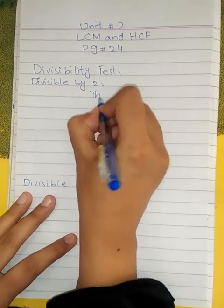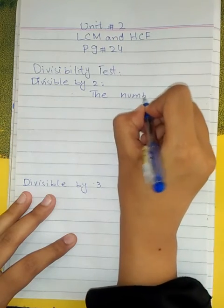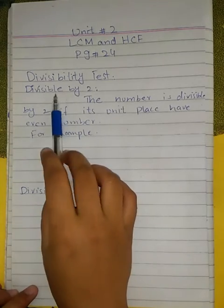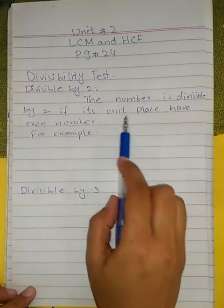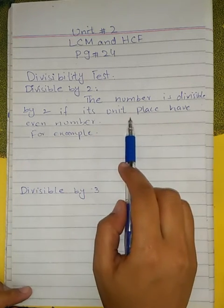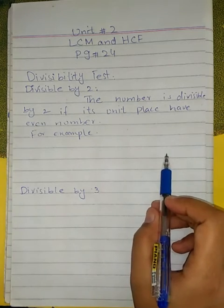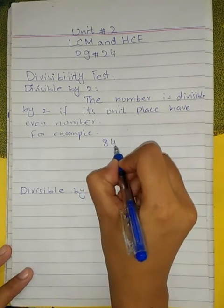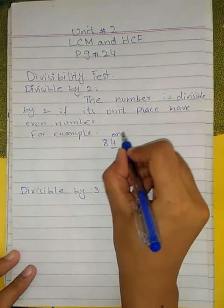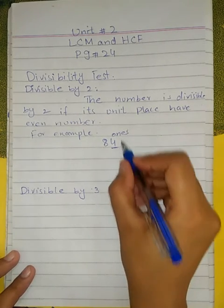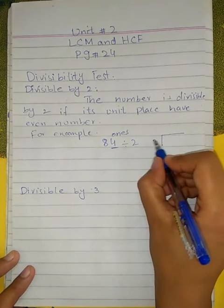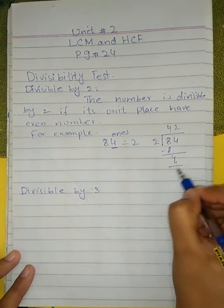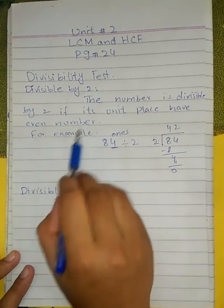Divisibility by 2: a number is divisible by 2 if its unit place has an even number. For example, the number 84 — its ones place has an even number (4), so this number is divisible by 2. You can verify: 2 × 42 = 84, it divides completely.